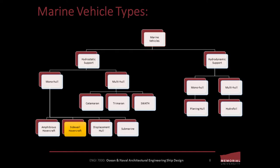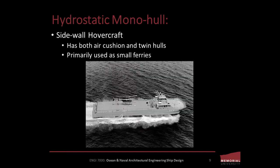A surface effect ship, or sidewall hovercraft, is a marine vehicle that has both an air cushion like a hovercraft and twin hulls like a catamaran. When the air cushion is in use, a small portion of the twin hulls remains in the water. When the air cushion is turned off, the full weight of the vessel is supported by the buoyancy of the twin hulls. Currently, SESs are used primarily as small ferries.